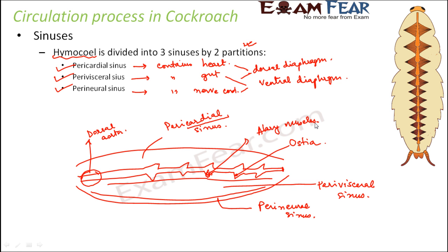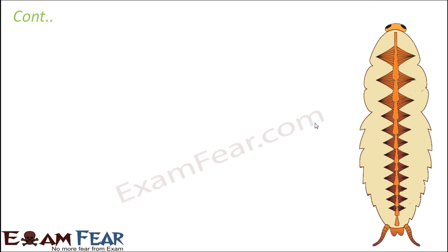To summarize the three parts of the circulatory system in cockroach: first is the heart, a tube-like pumping organ; second is the aorta or dorsal aorta, present at the anterior end of the heart; and third are the sinuses — blood-filled body cavities divided into pericardial, perivisceral, and perineural types.